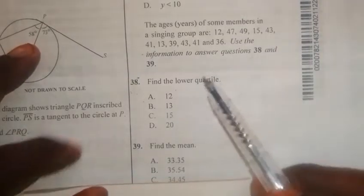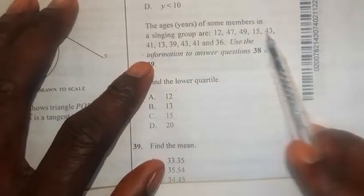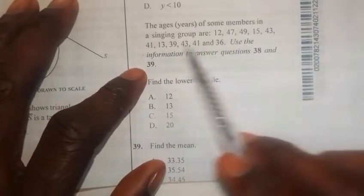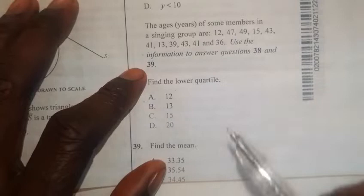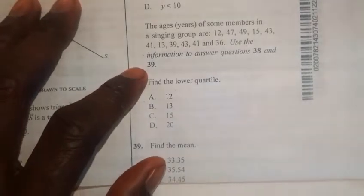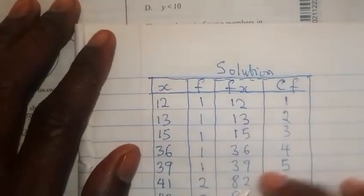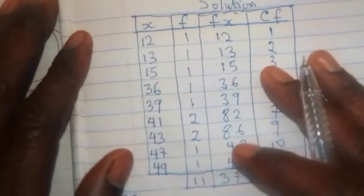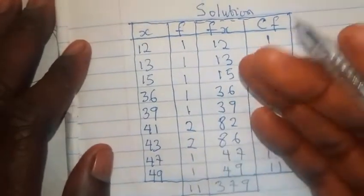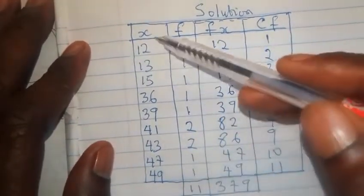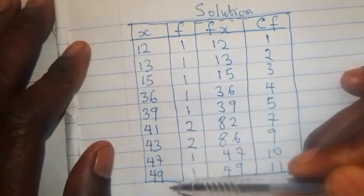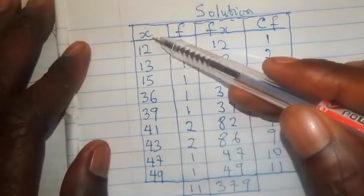Now, the question, the first thing we are going to do is to organize this distribution that is given to us here. We have to organize this in a frequency distribution. And I have taken out time to do so already. Alright? So, we are dealing with quartile and mean. So, look at all the ages of the people given to us. I represent it as X. Now,